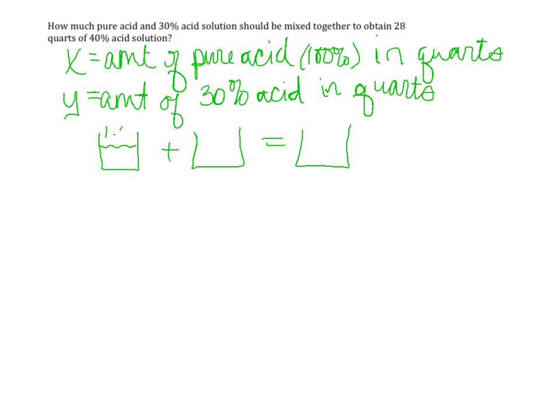My first bucket is going to be pure acid. The percentage of pure acid is 100%, and as a decimal I'd write that as 1.00 or simply 1, and I don't know the amount so I'm going to call that x. My next bucket is my 30% solution. Again, as a decimal that would be 0.30 or just 0.3, and I don't know the amount so I'm gonna call that y.